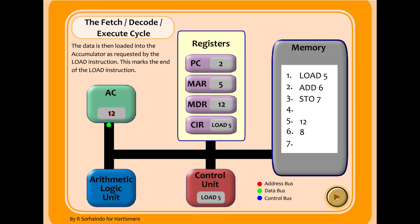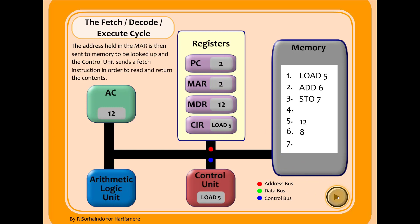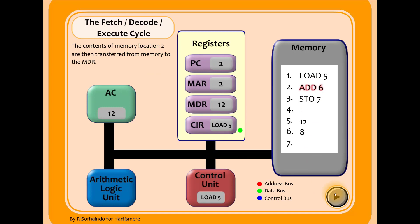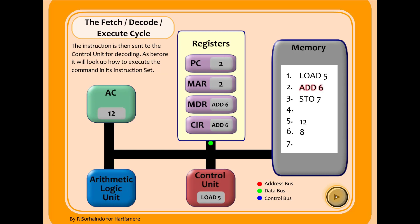We can now move on to fetching the next instruction. Program counter value two moves into the memory address register, so the next instruction will be fetched from memory address two. The address bus and control bus signal a fetch, and the instruction 'add 6' is retrieved from memory address two and put into the memory data register. It then gets moved into the current instruction register, and the control bus takes it to the control unit to be decoded.